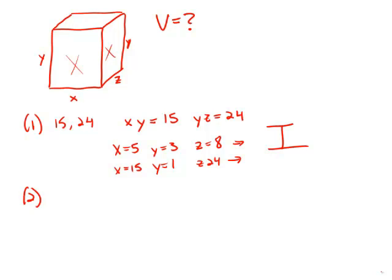Statement number two tells us merely that two opposite sides of the solid has area 40. So let's assume that this is the bottom and the top. And of course, that would be x times z equals 40.